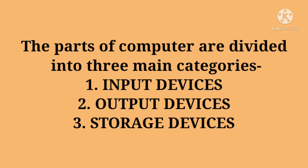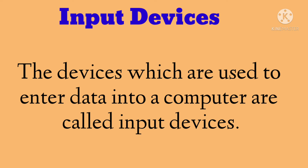As you know that the human body is made of different parts. Like that, the computer is also made with different parts. The parts of a computer are divided into three main categories: input devices, output devices, and storage devices.